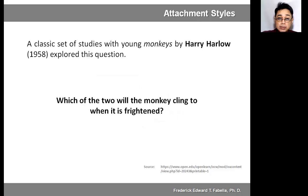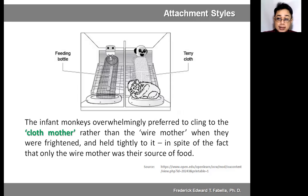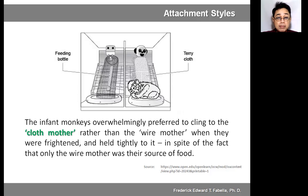The result is that the infant monkeys overwhelmingly preferred to cling to the cloth mother, even though it did not have a feeding bottle. This shows that attachment is not just about dependence on the mother's ability to provide the nutritional needs of the baby monkey.